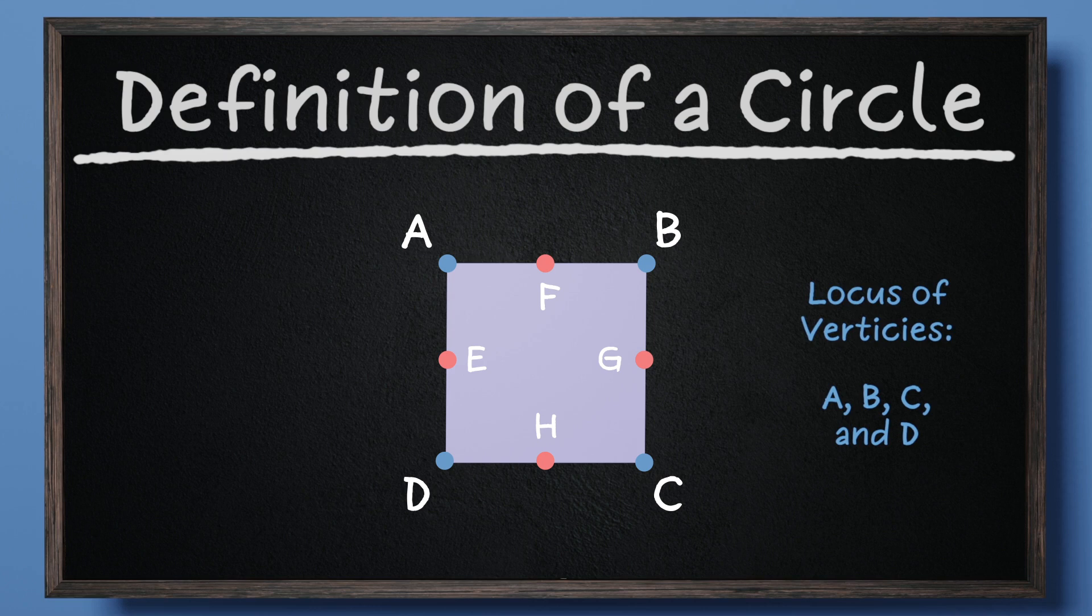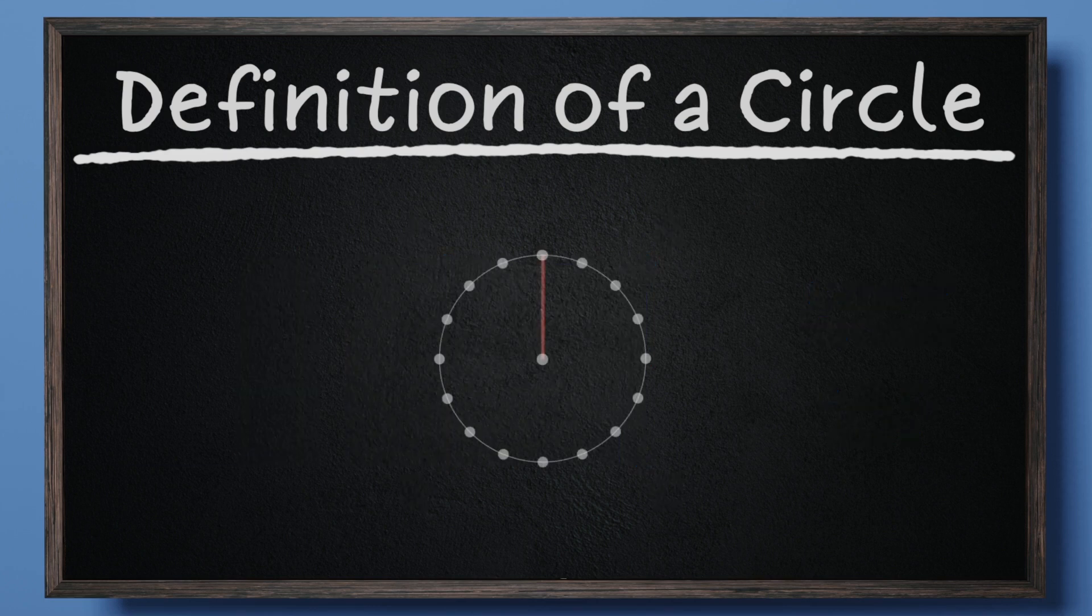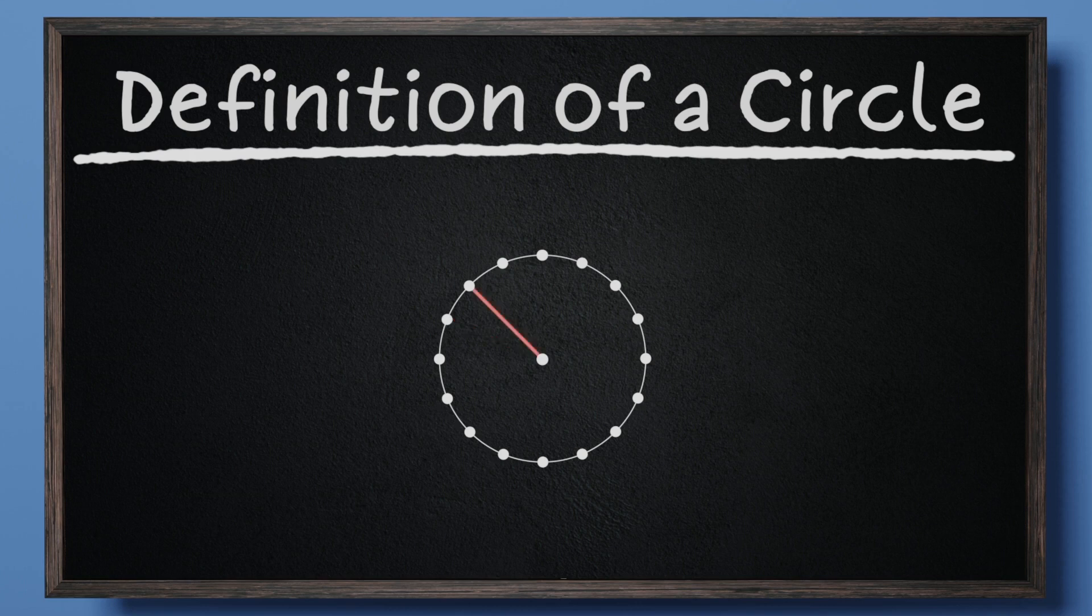These points meet the criteria of being a vertex, while E, F, G, and H do not. Applying this concept to circles, we are looking for every point that is equidistant from the center.